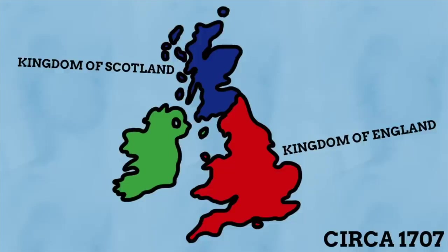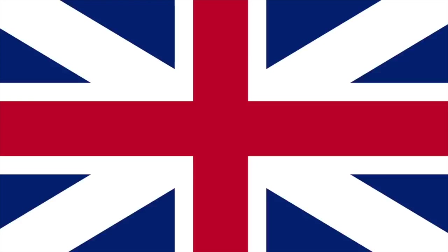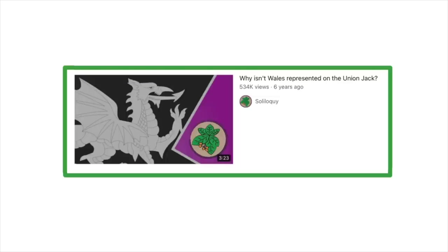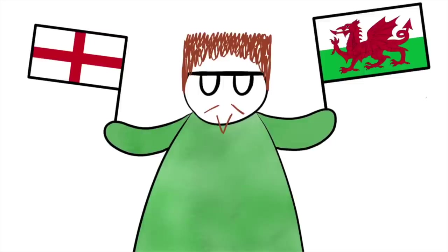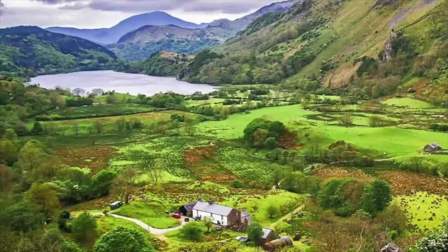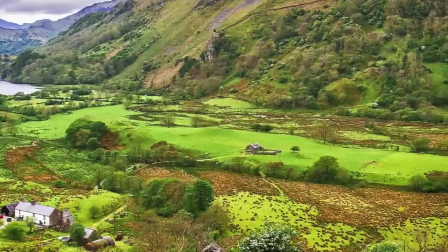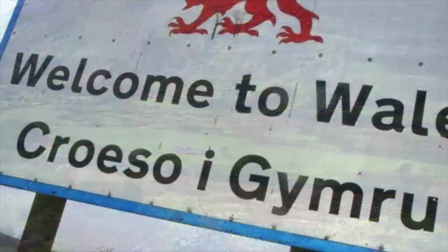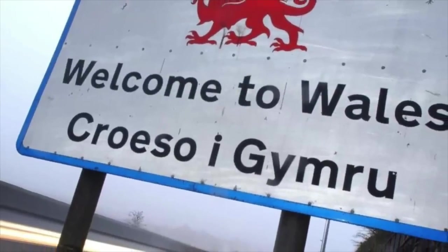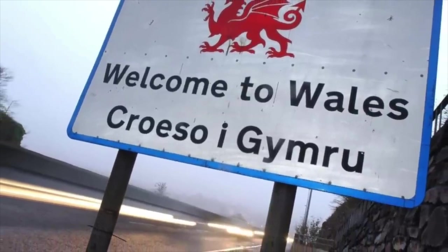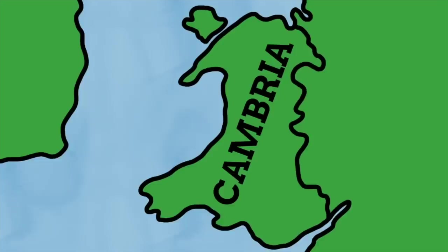The reason the Welsh flag isn't represented on the Union Jack is because when the United Kingdom first came into being in 1707 with the union of the kingdoms of Scotland and England, Wales was already a part of the Kingdom of England — so Wales was represented via the red cross of England. Even today, England and Wales are administered as one jurisdiction. Wales has an incredibly strong national identity, which is best seen with the Welsh language, made official in 2011 and seen alongside English on most major signs in the nation.